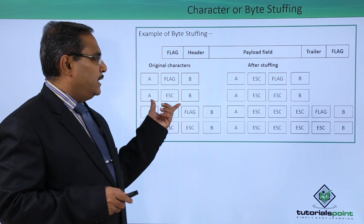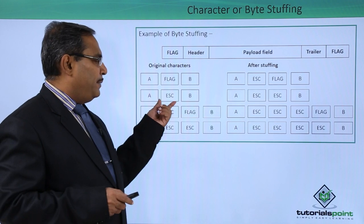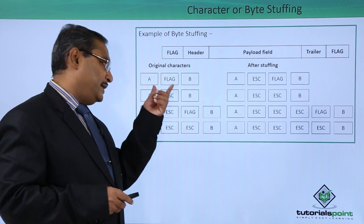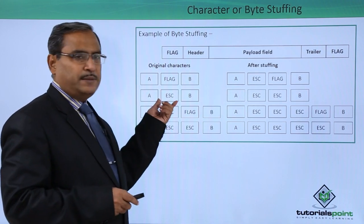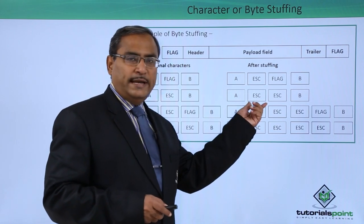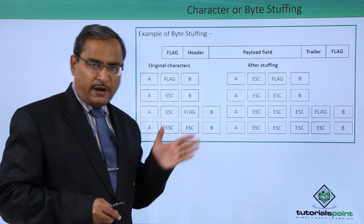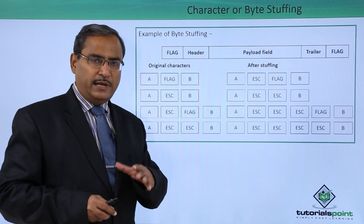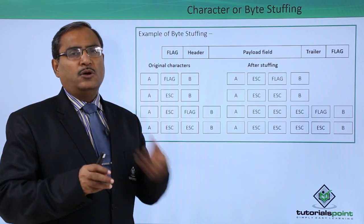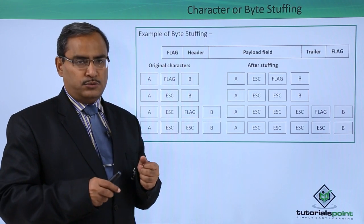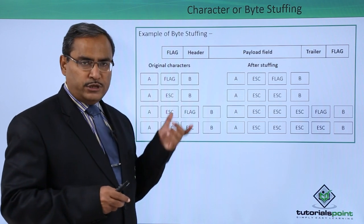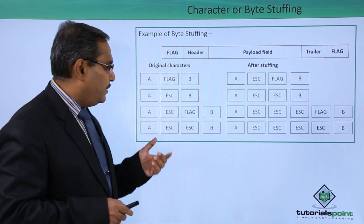Now suppose in the original data we have an escape character as part of the data itself. After stuffing, we put one escape alongside it. At the receiving end, if we find two escape characters side by side, we take one out, and we are left with the original data frame.